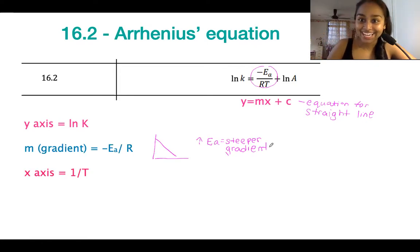Your x axis is going to be 1 over T, so T is temperature. And last but not least, your y intercept is going to be the natural log of your Arrhenius' constant.